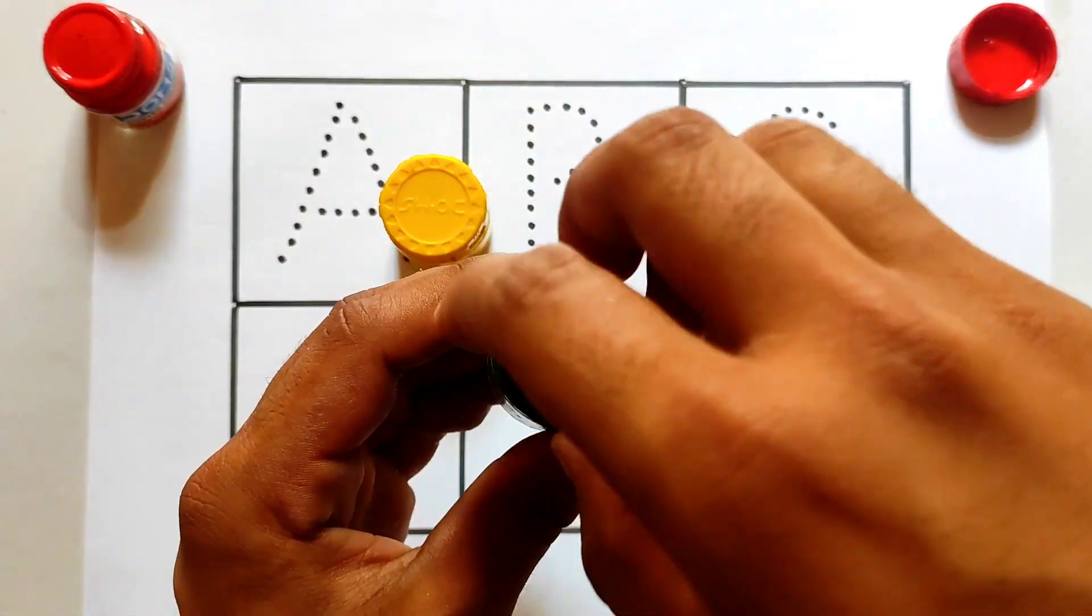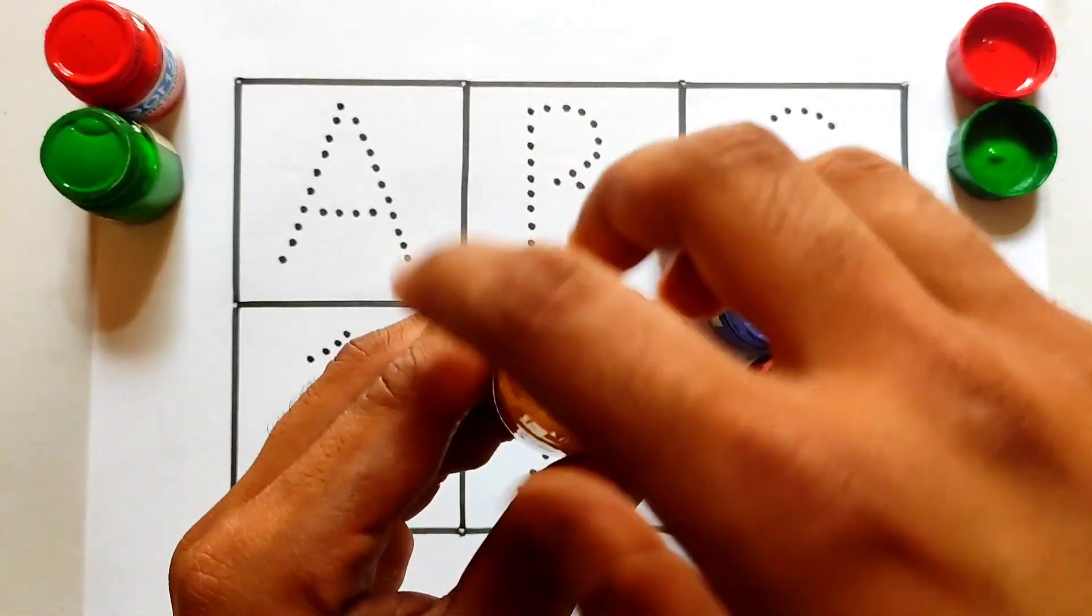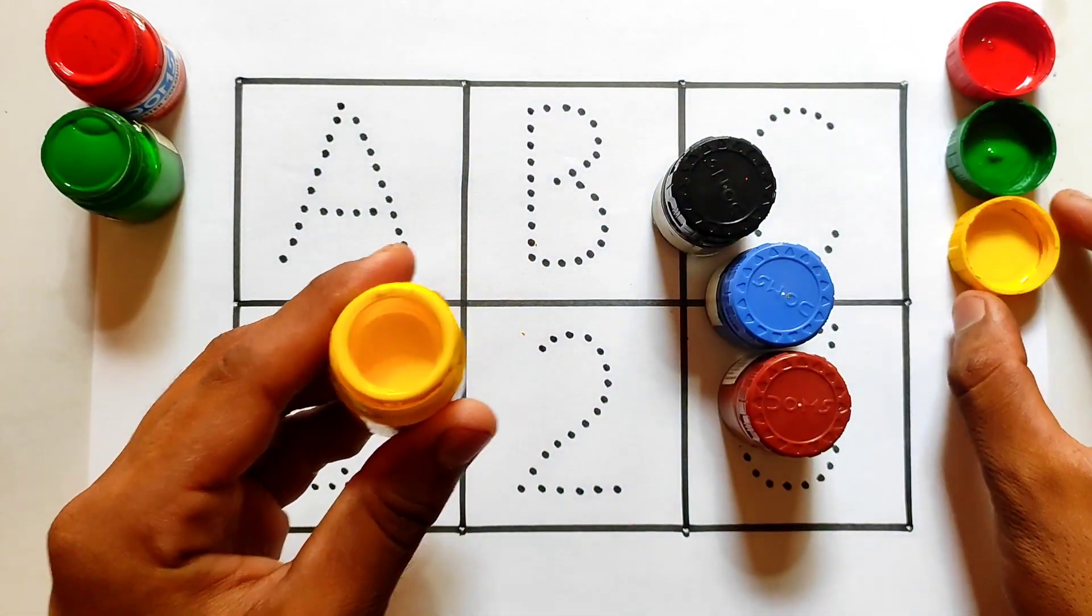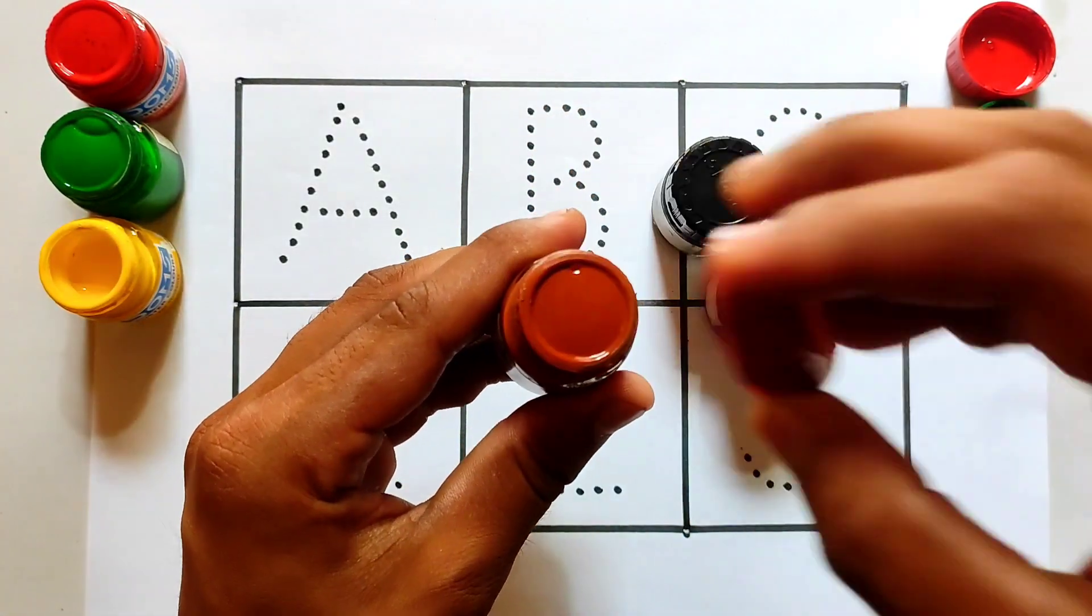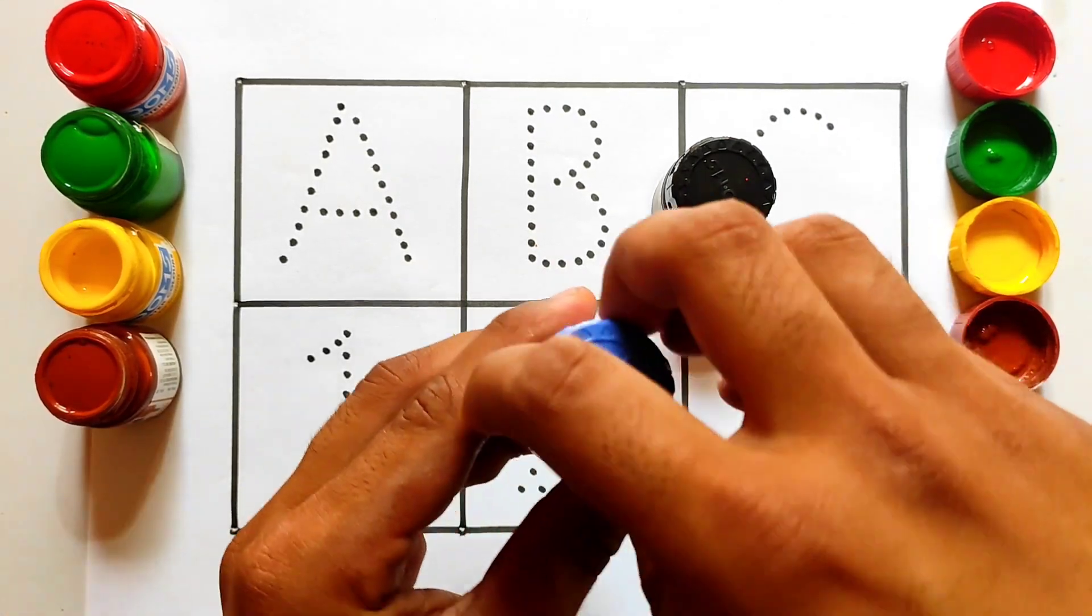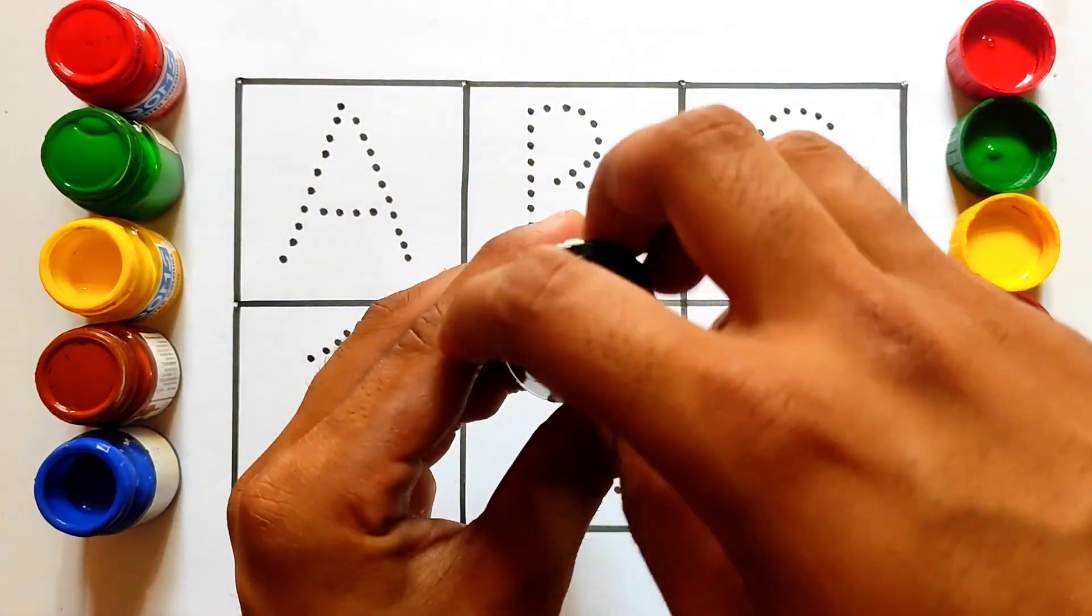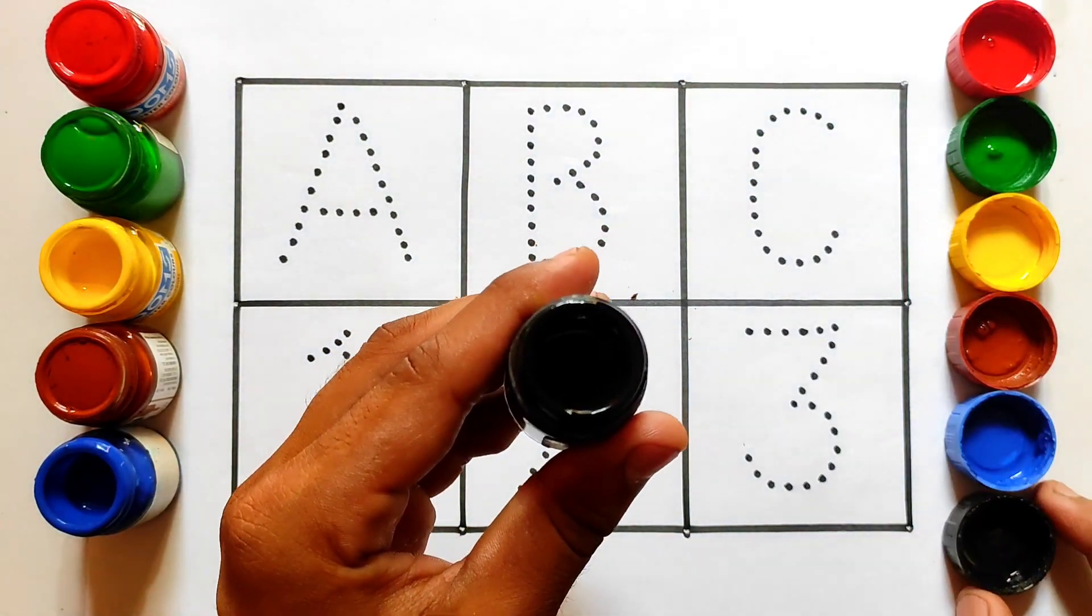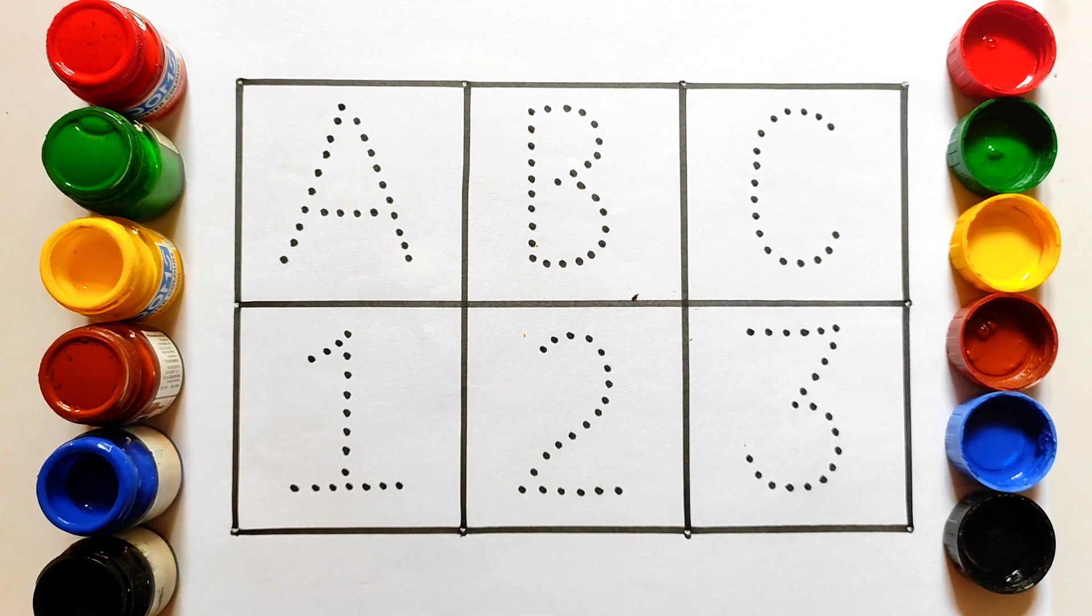This is green color, green color. This is yellow color, yellow color. This is brown color, brown color. Blue color, blue color, and last black color, black color. So let's start the drawing.